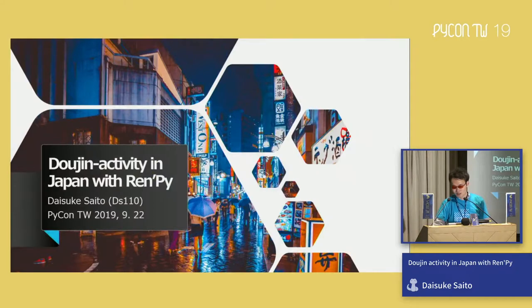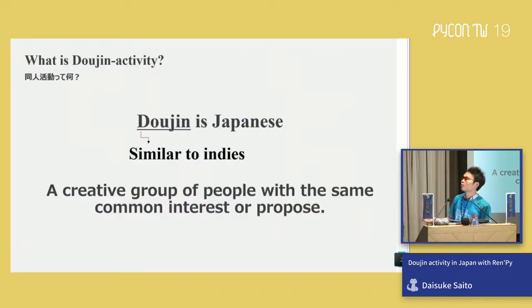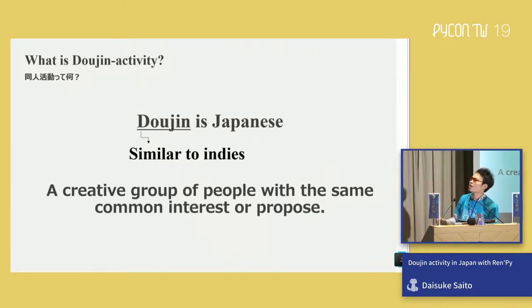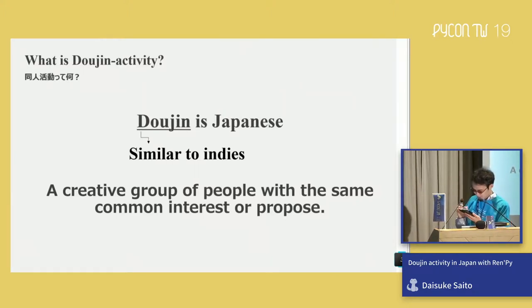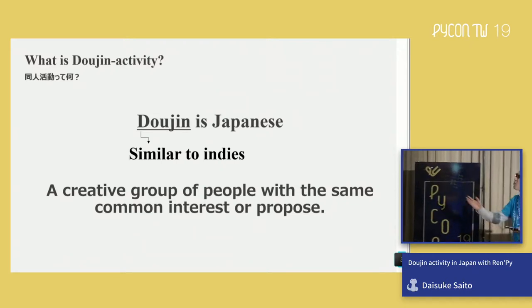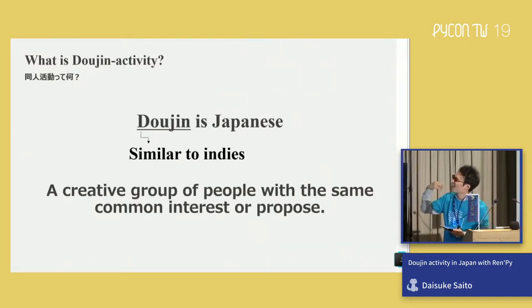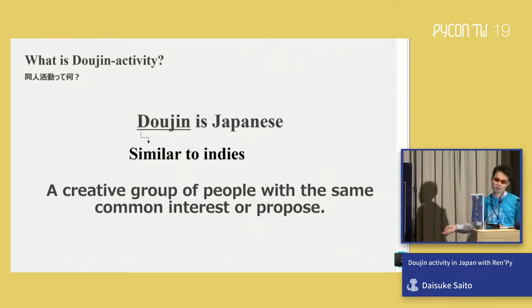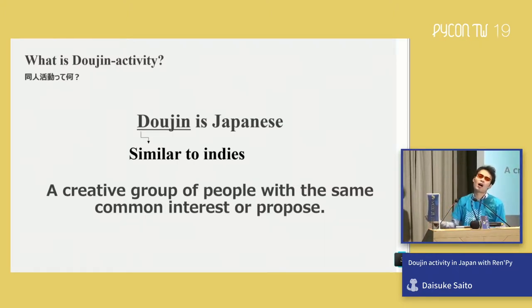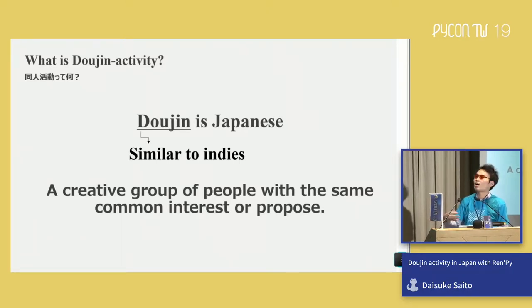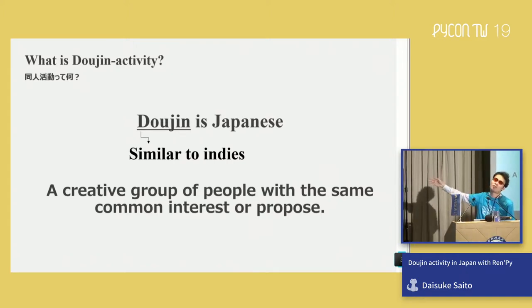My presentation is titled 'Dojin Activity in Japan with RenPy.' What's Dojin Activity? Dojin is Japanese, similar to Indies, meaning a creative group of people with the same common interest or purpose. I have been creating books and games through Dojin Activity for eight years.